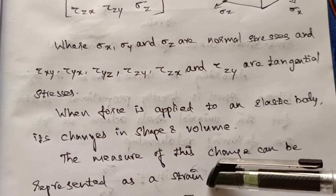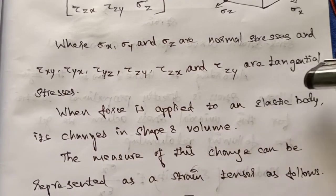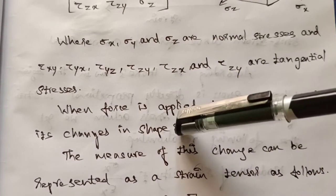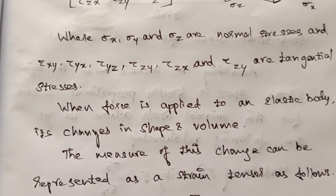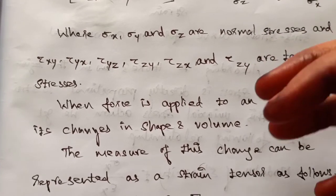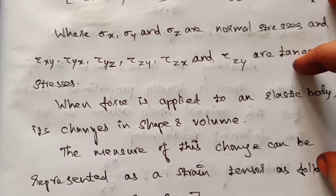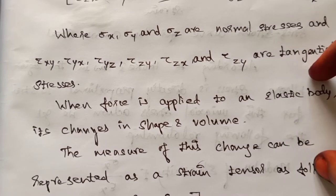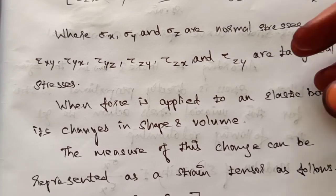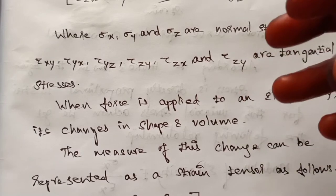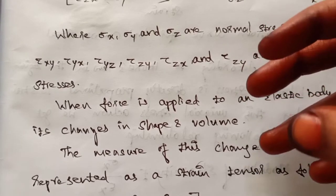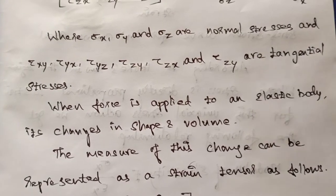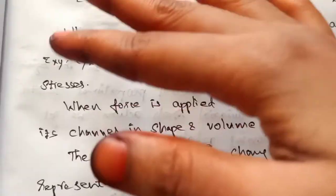When a force is applied to an elastic body, it changes its shape and volume. For example, in a universal testing machine, we test a rod by applying a load from the upper direction of the machine. The load is applied to the rod.